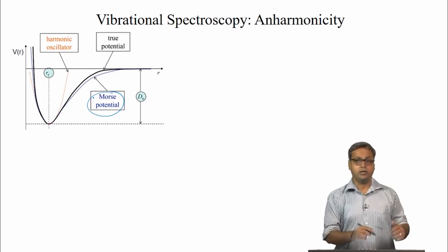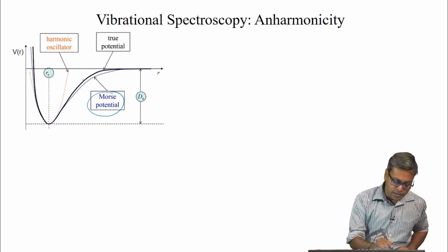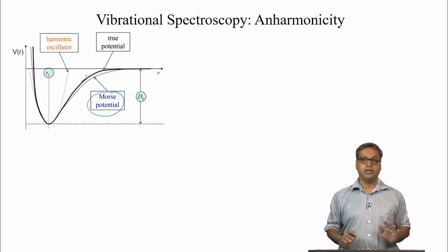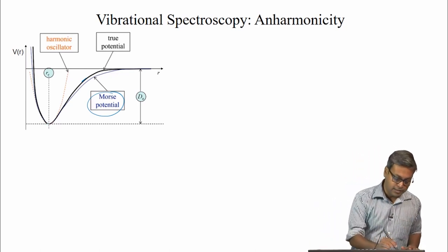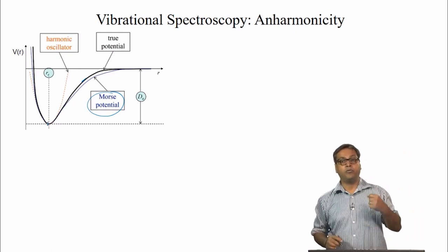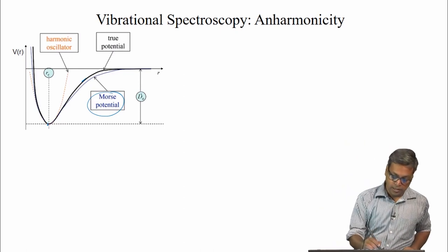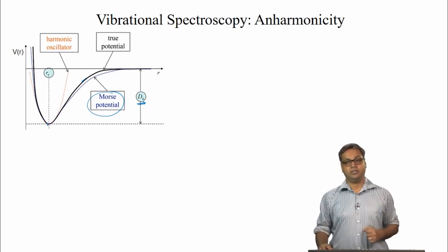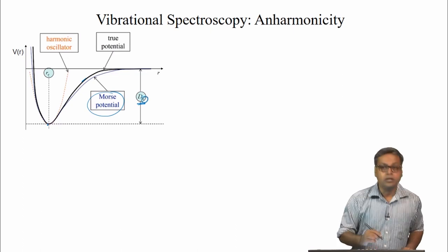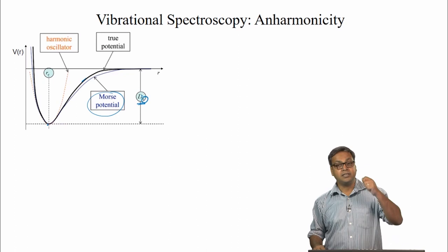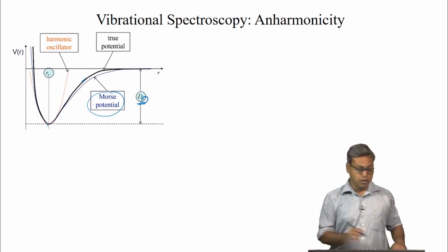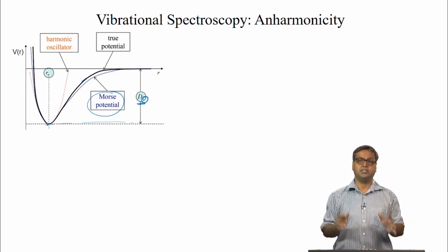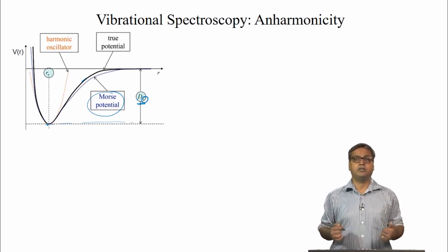Let us look at this figure — the black line here is meant to illustrate the true potential. We can see the equilibrium bond length is the minimum of the potential function, and we have something called D_E. This D_E is the dissociation energy. The subscript E in D_E means it is the dissociation energy from the equilibrium position.